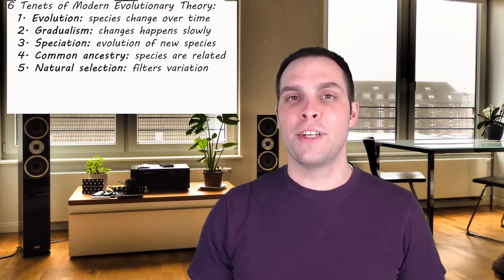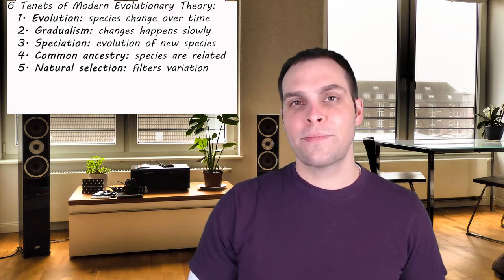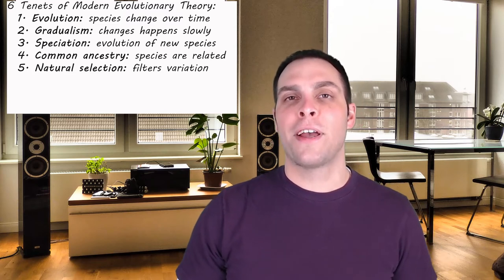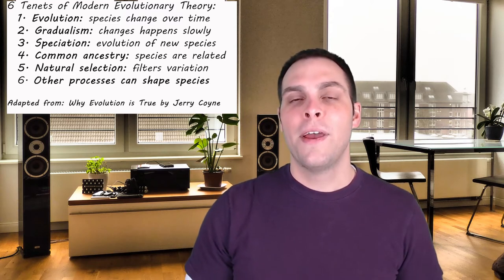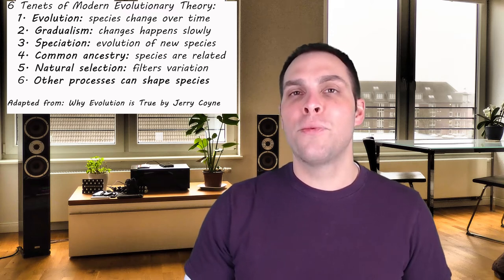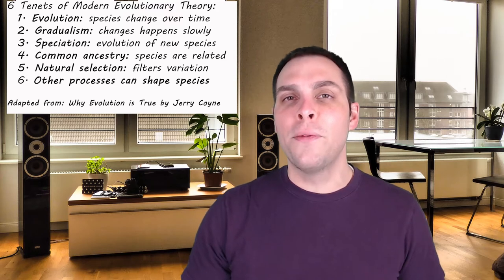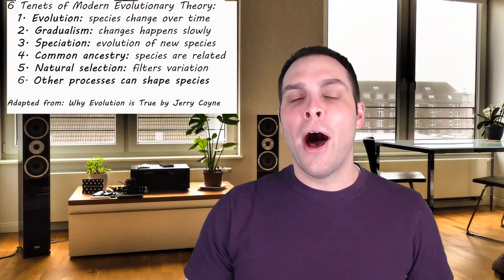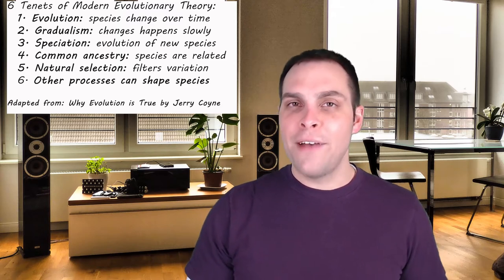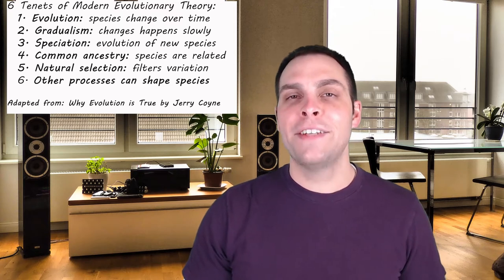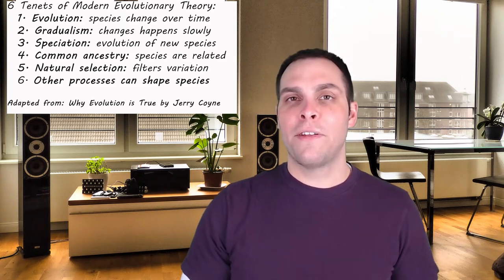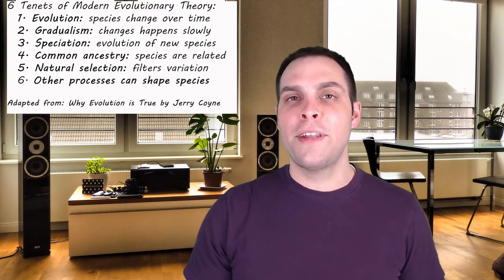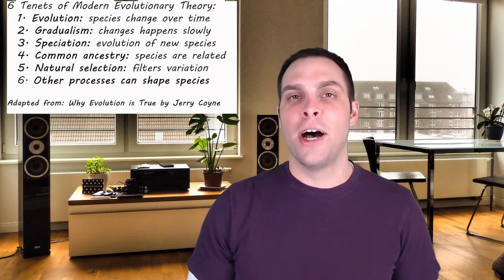The sixth key tenet of modern evolutionary theory or Neo-Darwinism is that processes other than natural selection can shape species. Natural selection is the major reason why species change and as far as we know it is the only way that species can become better adapted to their environment. But other processes such as genetic drift do have an influence on species. While it may not lead to adaptation, we do know that processes other than natural selection do influence the evolution of species.